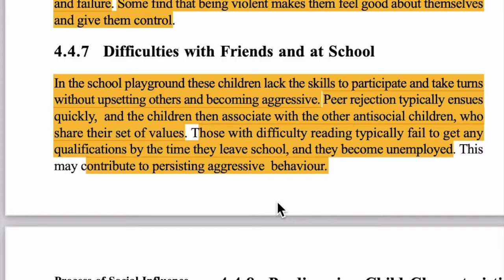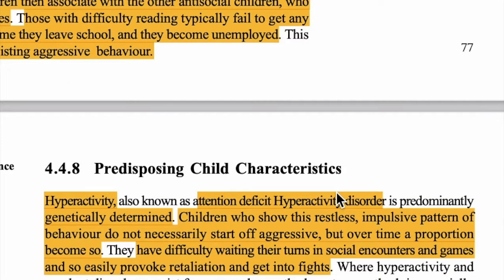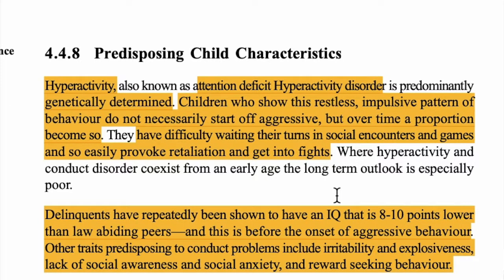Difficulty with friends and at school — ये बच्चे जब किसी skill में अच्छे नहीं होते और peer group reject कर दे तो anti-social बच्चों के साथ associate हो जाते हैं और उनकी values सीखने लगते हैं। School में ठीक से पढ़-लिख नहीं पाते, unemployment का शिकार होते हैं और आगे जाकर aggressive behavior में indulge हो जाते हैं।